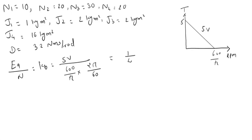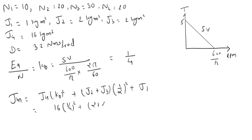The mean inertia is calculated by J4 Kb squared plus J2 plus J3 times (1/2) squared plus J1. This will be 16 times (1/4)² plus 2 plus 2 times 1/4 plus 1, which comes out to 3 kg m².